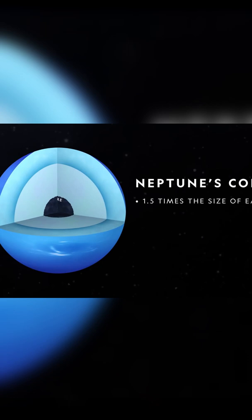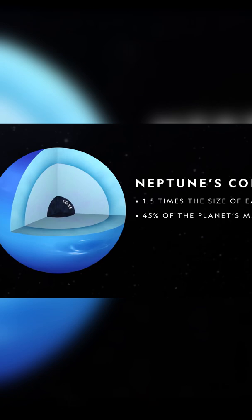At its heart is a solid core about one and a half times the size of Earth, making up about 45% of the planet's mass. The core is made of water ice and silicate rock.